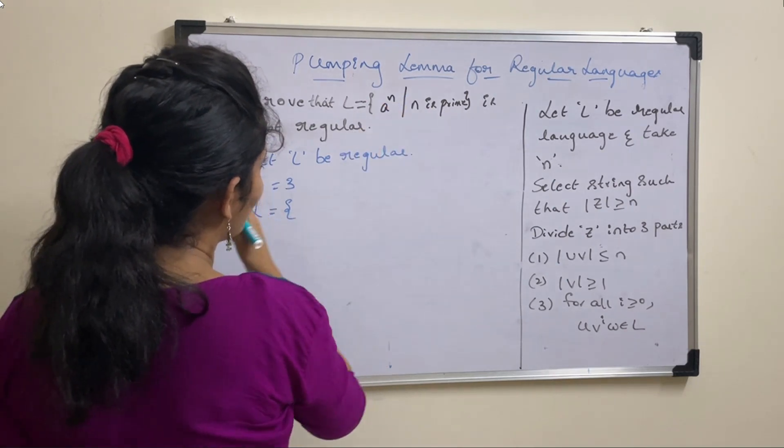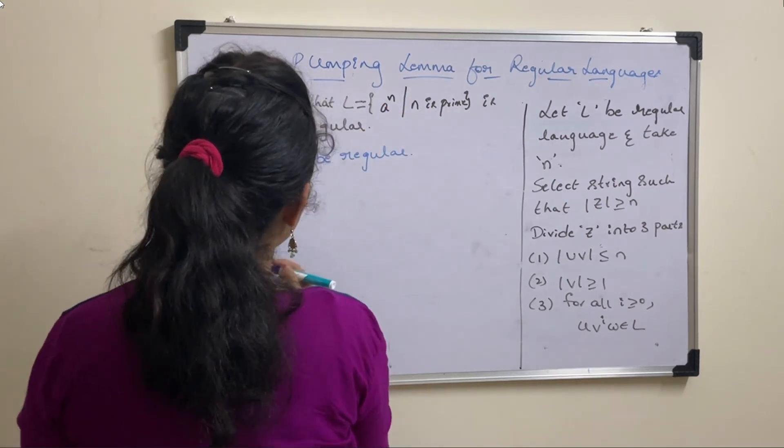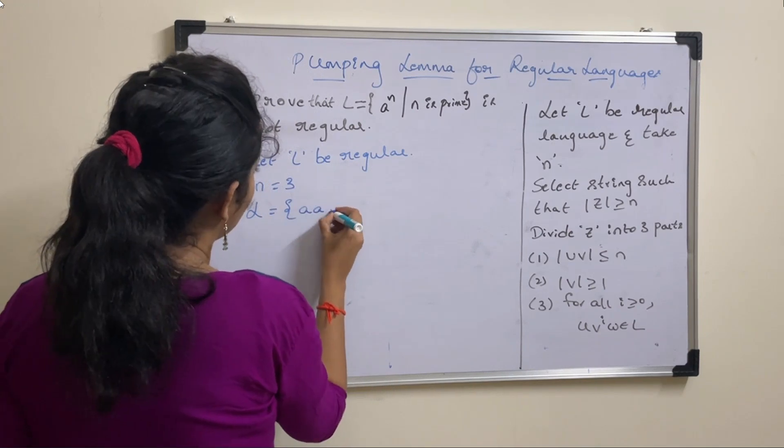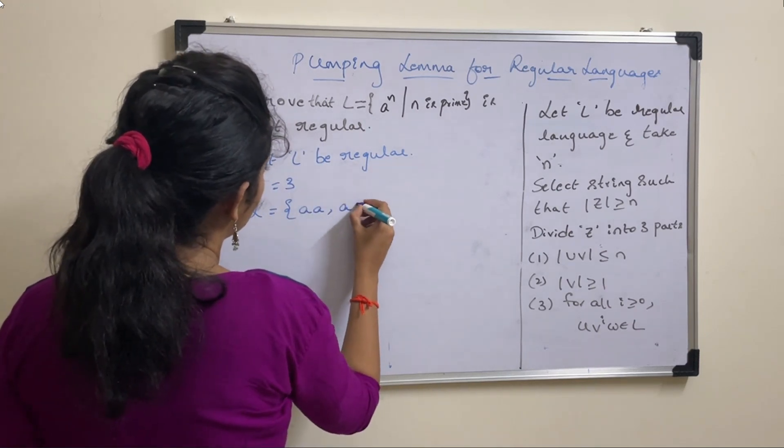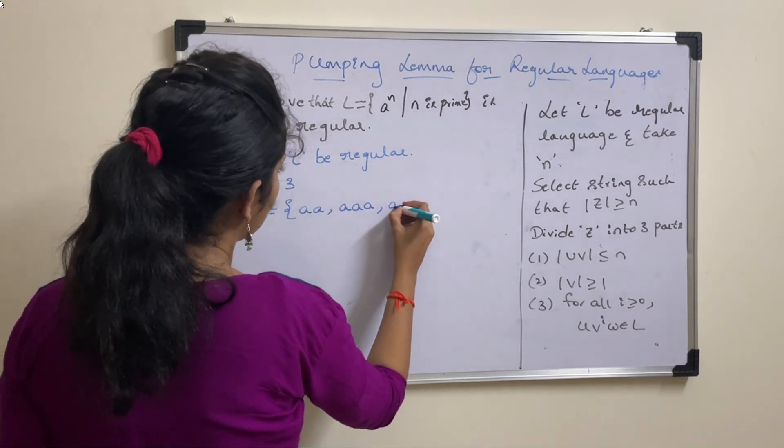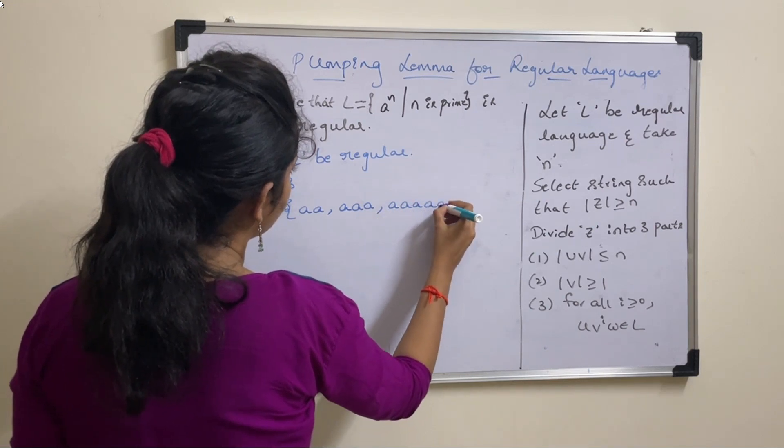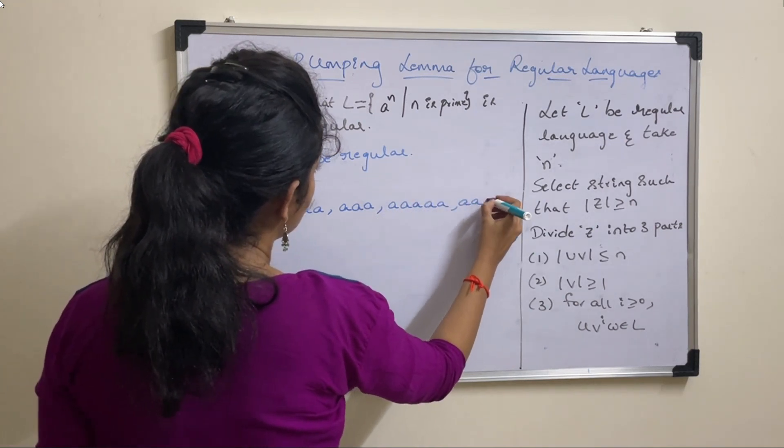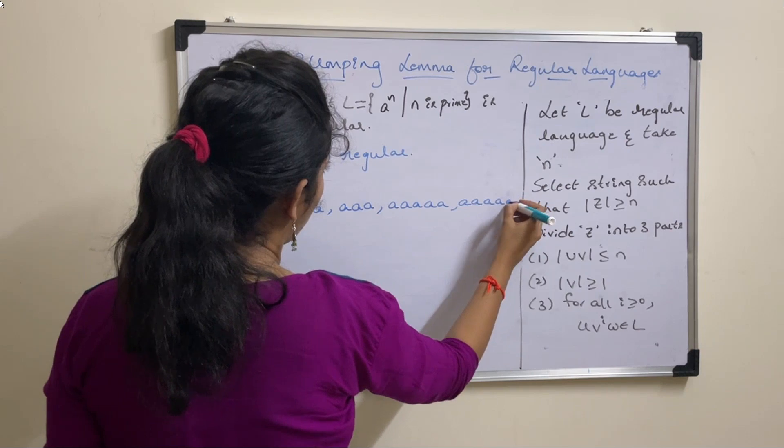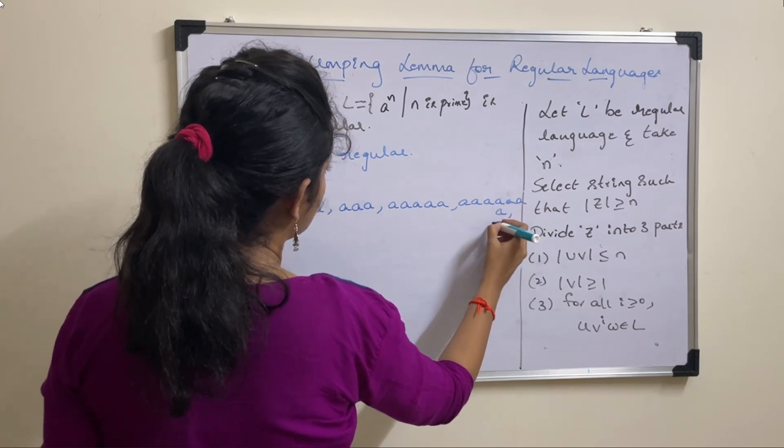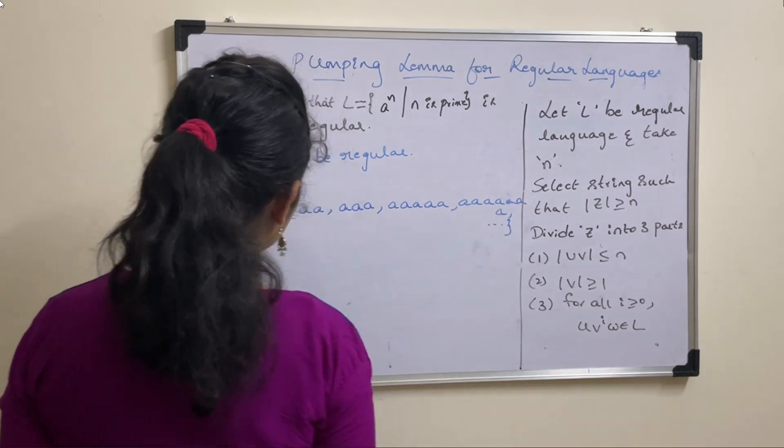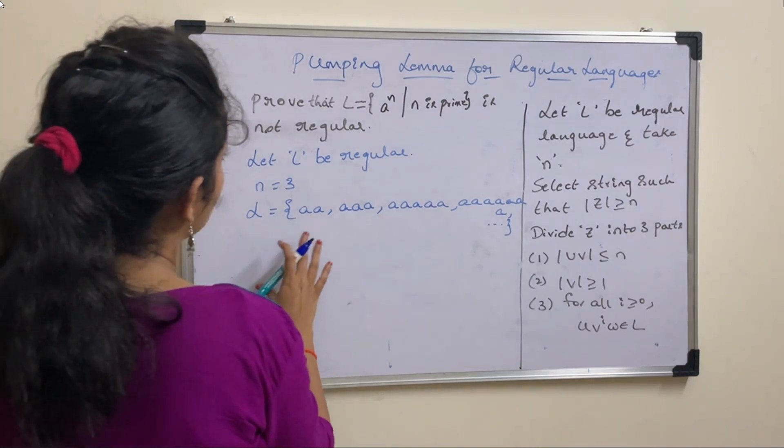You need to take prime numbers. So prime numbers are 2, 3, 5, 7, and so on.